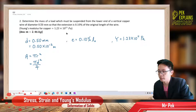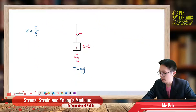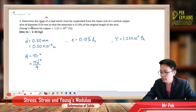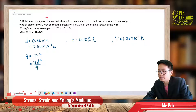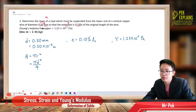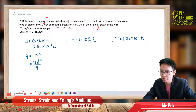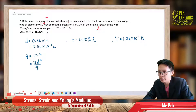What you want to find is the mass hanging on the copper wire. This is the copper wire and this is the mass hanging. The diameter is given in mm — we need to change to SI unit. The extension is the elongation: 0.1% of the original length L0. The Young's modulus is also given.